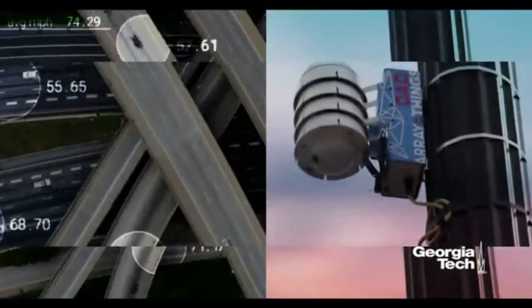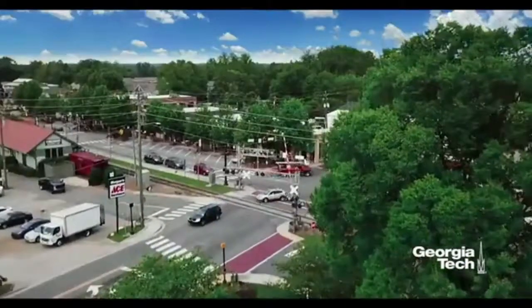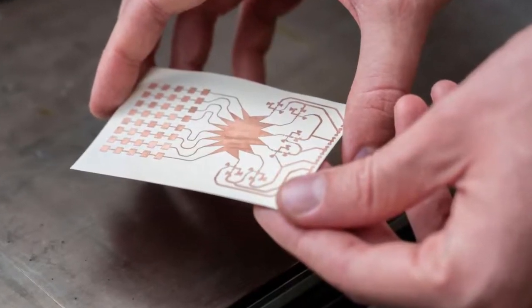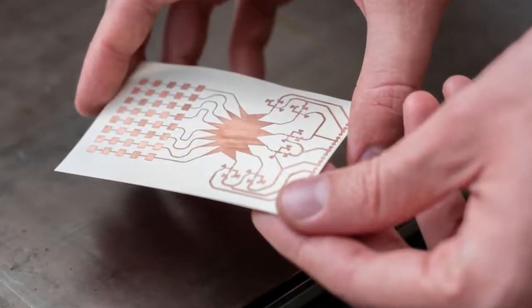The Georgia Tech inventors have developed a flexible Rotman lens-based rectifying antenna system capable, for the first time, of millimeter wave harvesting in the 28 GHz band.